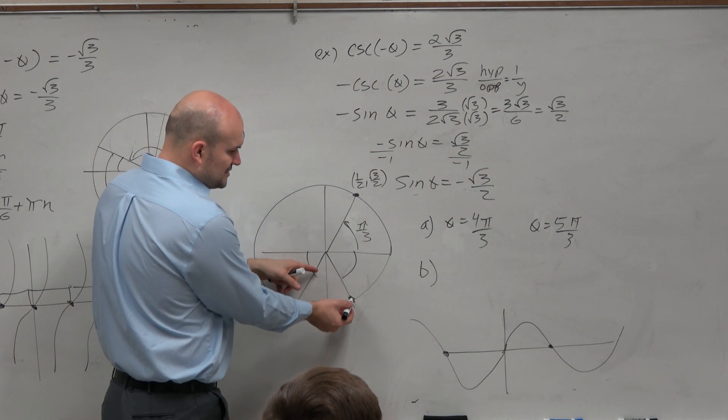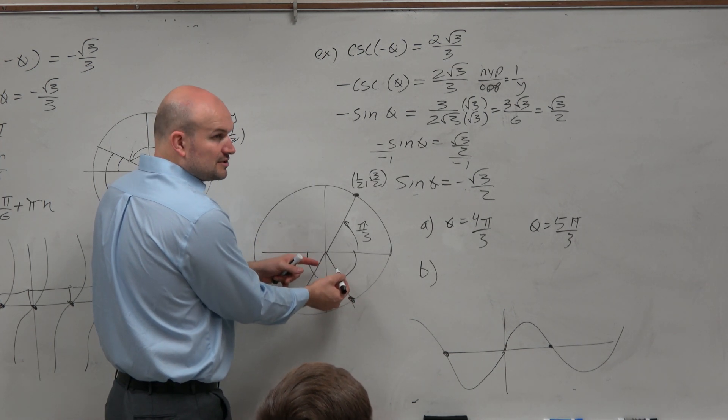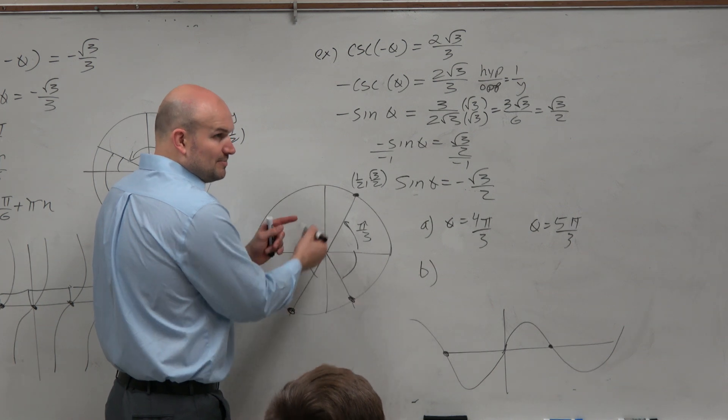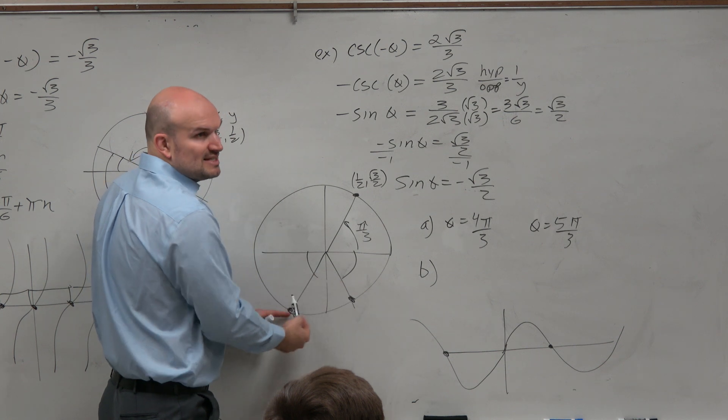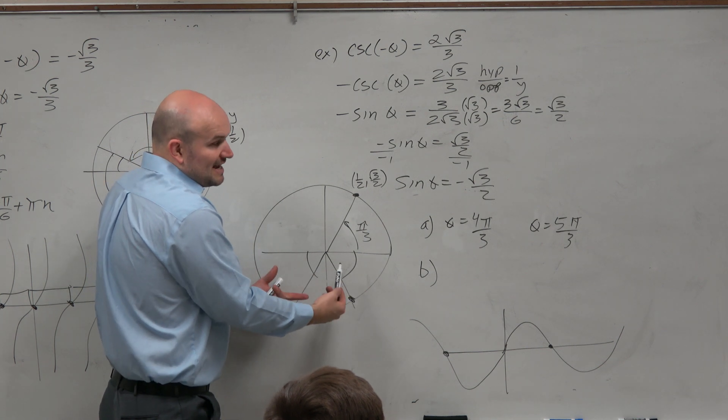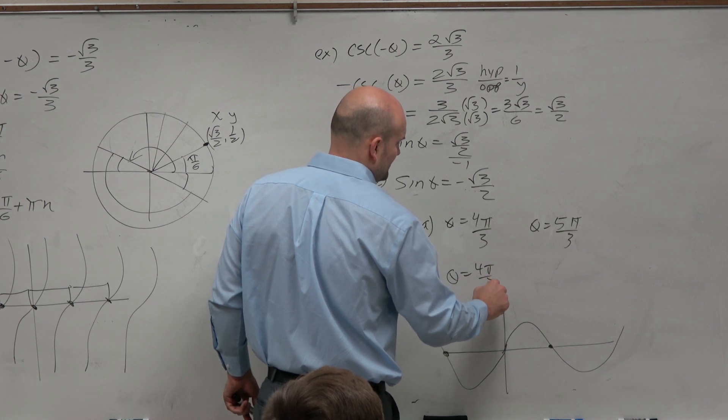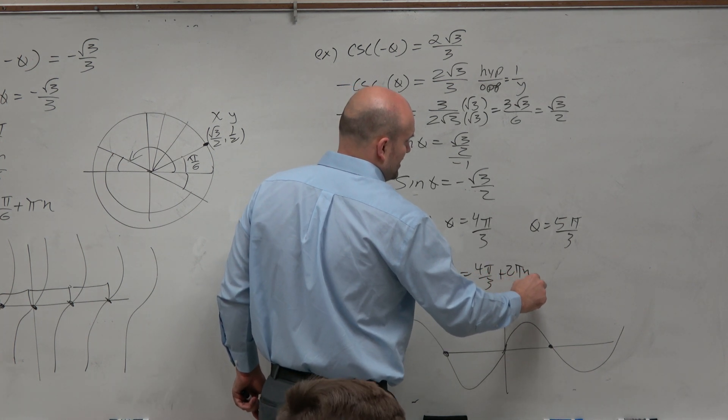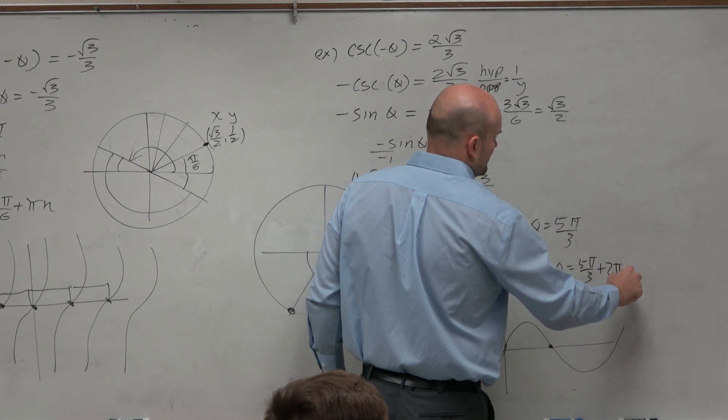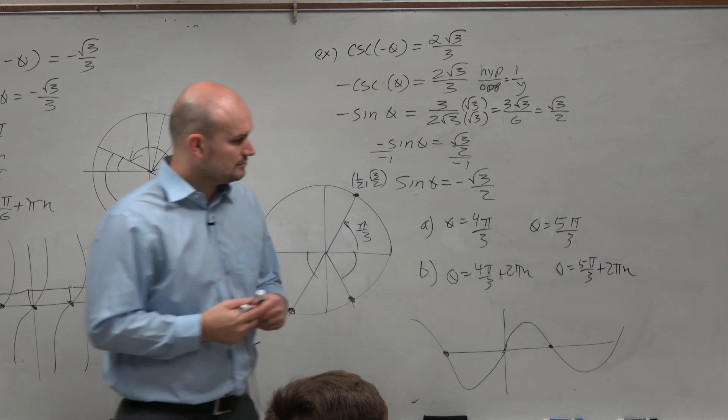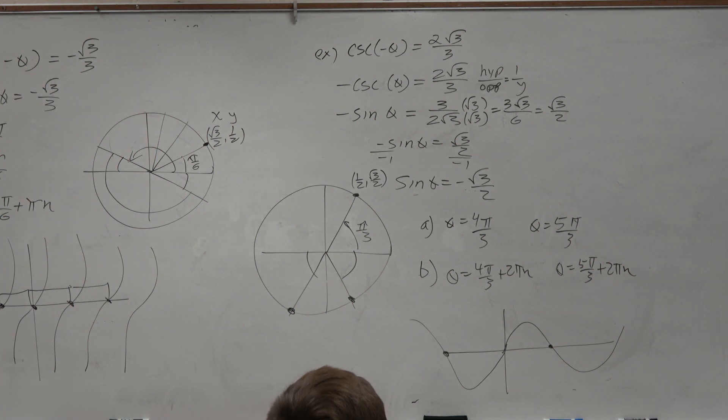Like, think about this, guys. If here's your solution, if I add 2 pi, am I going to get another solution? If I subtract 2 pi, do I get a solution? Yes. And do I have to do that for both of them? Because they're not equal distance from each other, are they? OK. So I have to add 2 pi to both solutions. So theta equals 4 pi over 3 plus 2 pi n. And theta equals 5 pi over 3 plus 2 pi n. And there you go. Any last minute questions on that one?